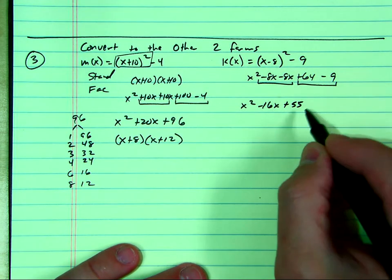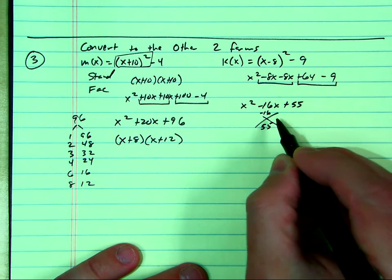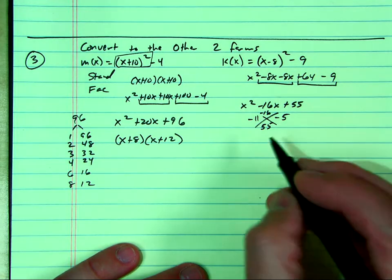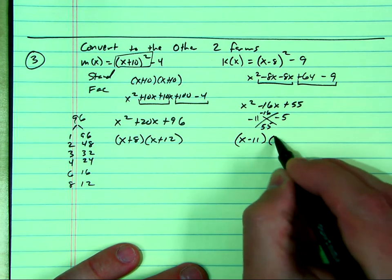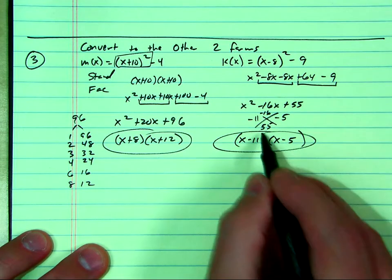Aha! What are the numbers that multiply to 55 that add up to negative 16? It's negative 11 and negative 5. Woo, this is a tough one. x minus 11 and x minus 5. Alright, there's our two answers for the second video for today.